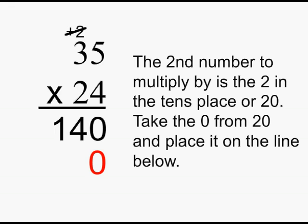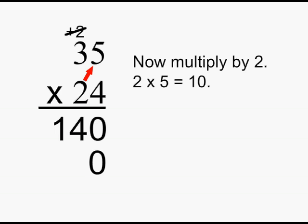The second number to multiply by is the 2, which is in the tens place, or 20. You can take the 0 from 20 and place it on the line below. Now multiply by 2.